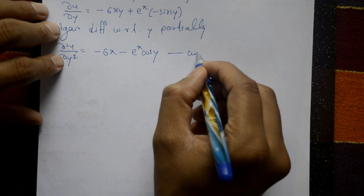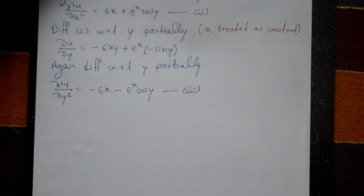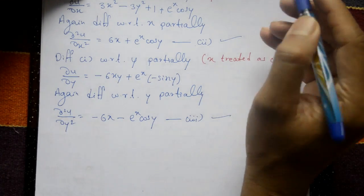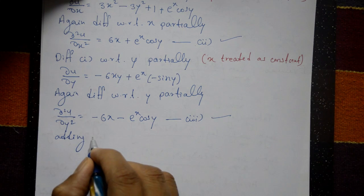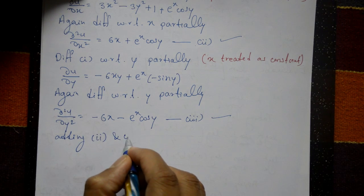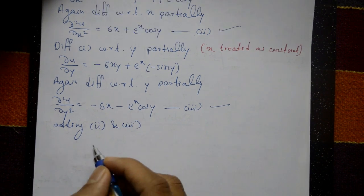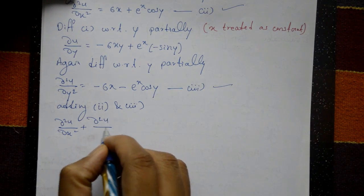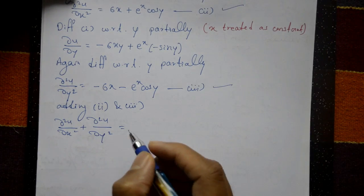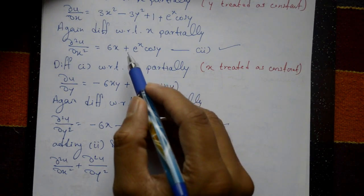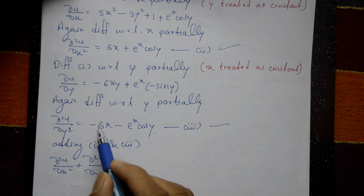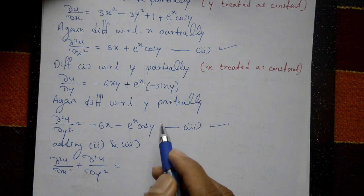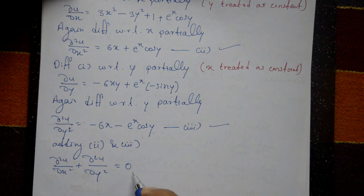Now add equation number 2 and equation number 3. ∂²u/∂x² + ∂²u/∂y² = 6x minus 6x (these cancel) plus eˣcos y minus eˣcos y (these cancel), which equals 0. This is the required answer.